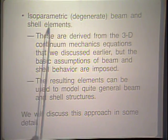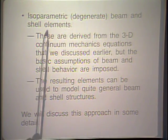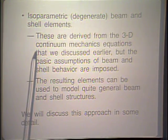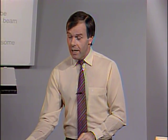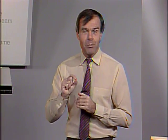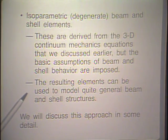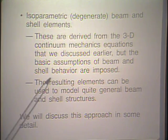The approach for these modern elements is to use isoparametric interpolations. We talk about the isoparametric degenerate beam and shell elements — degenerate because we obtain these elements by degeneration from three-dimensional behavior: we take the 3D continuum equations and degenerate them to the particular shell or beam behavior we wish to capture. The resulting elements can be used to model quite general beam and shell structures, which is a very large advantage in engineering practice.